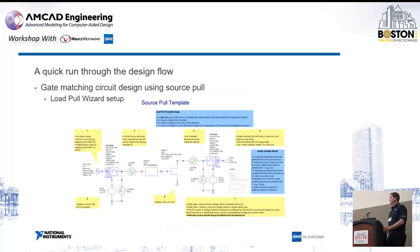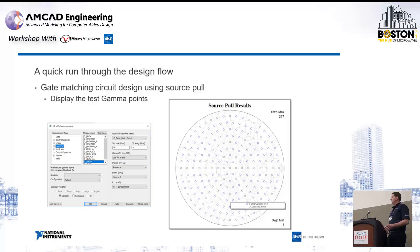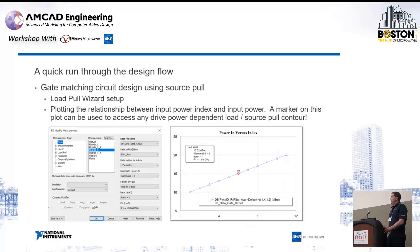The next thing is load pull. We see people take different approaches, but the approach taken here was to first do a source pull — 50 ohms at the drain — pulling the source impedance with the stability network in place. We pull the entire Smith chart, leaving the load as 50 ohms, using a lot of points so we're not relying on interpolation between measured points, and do that over a full power range. This is done over a dynamic range sweep, a couple of dB up to 10 dBm of input drive, capturing essentially the whole Smith chart on the source side.